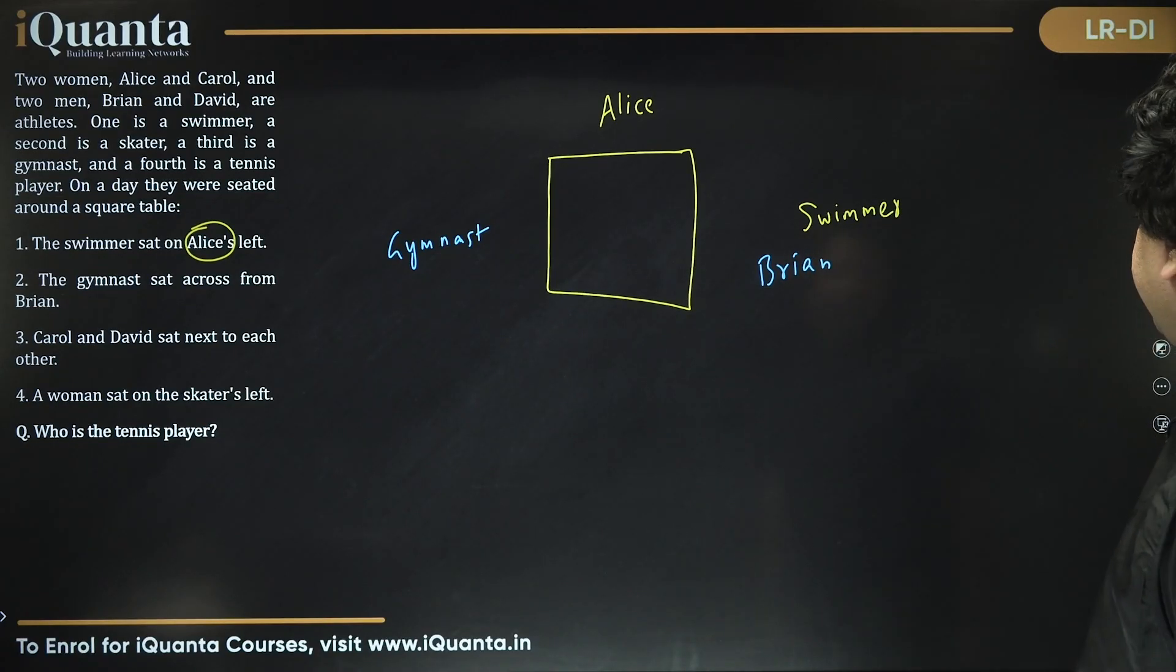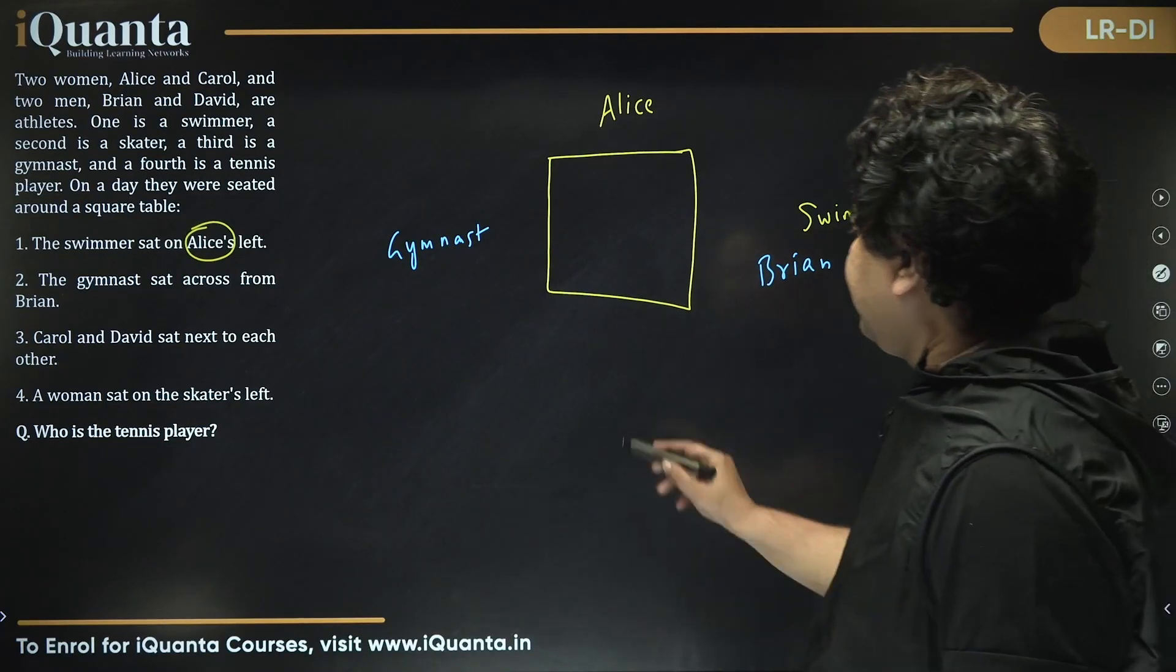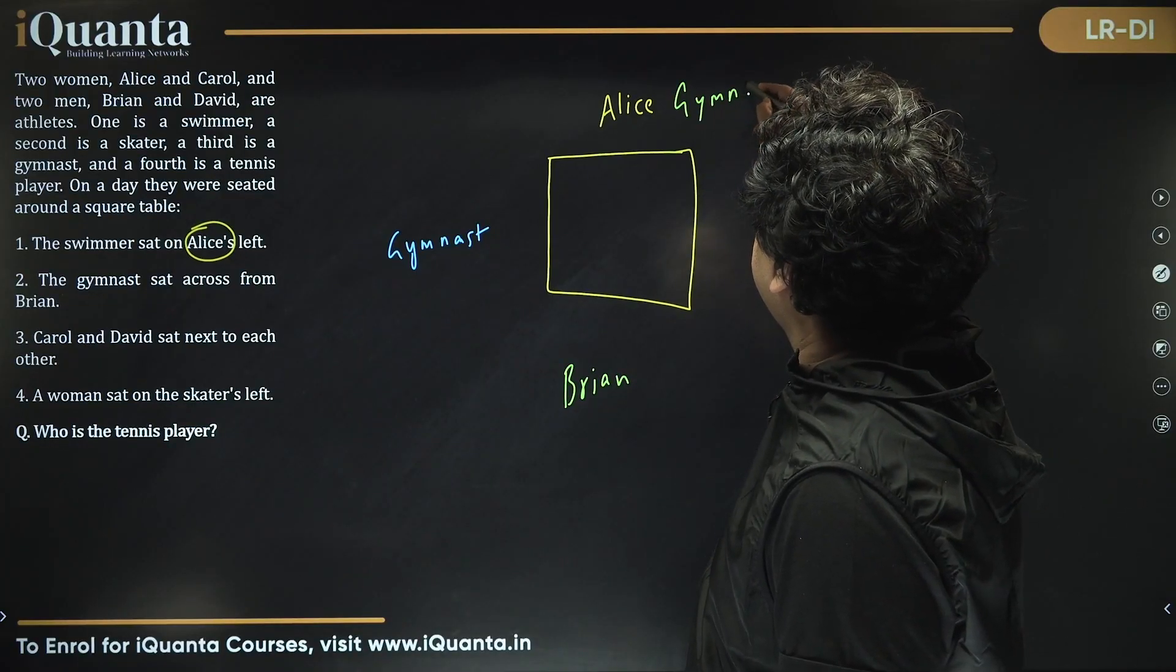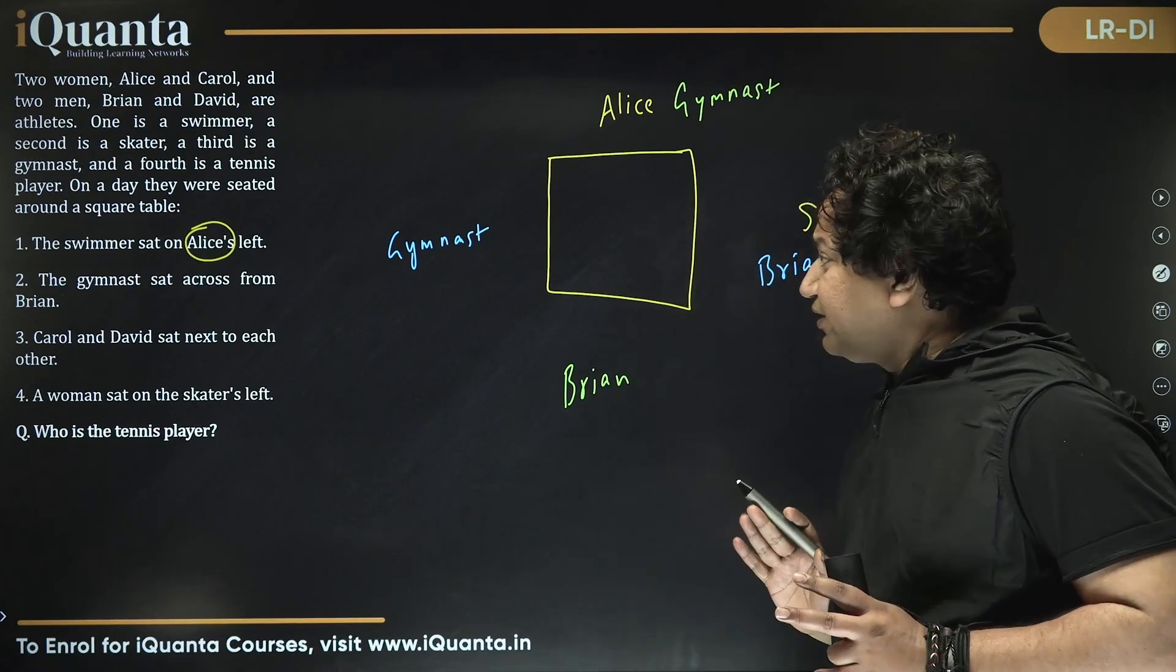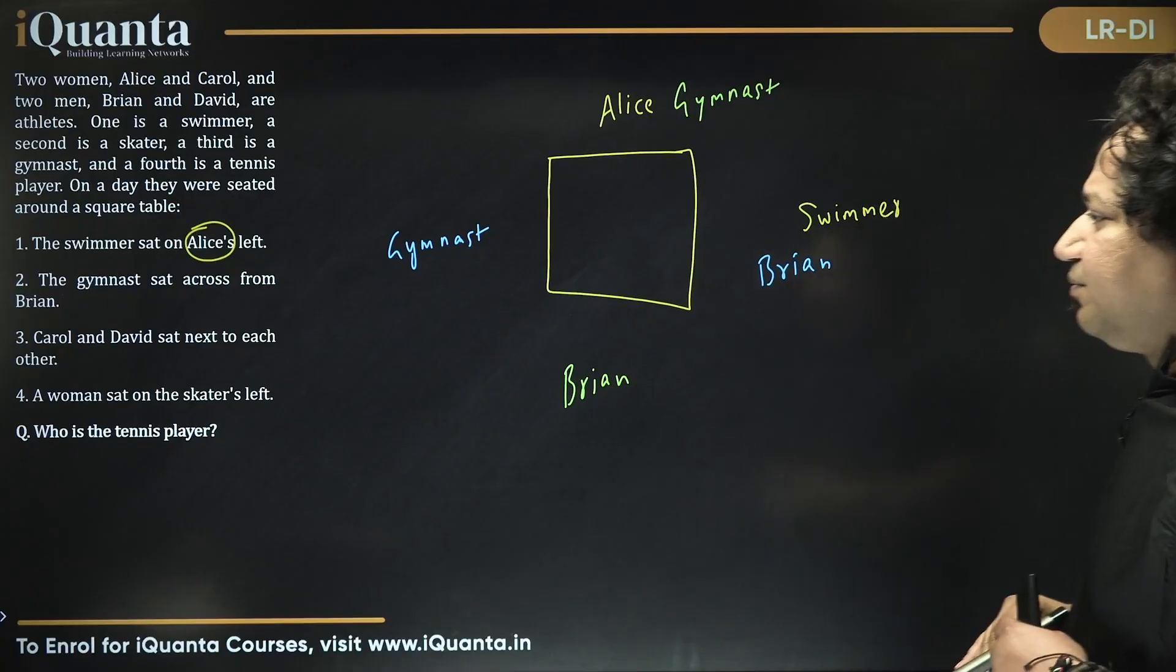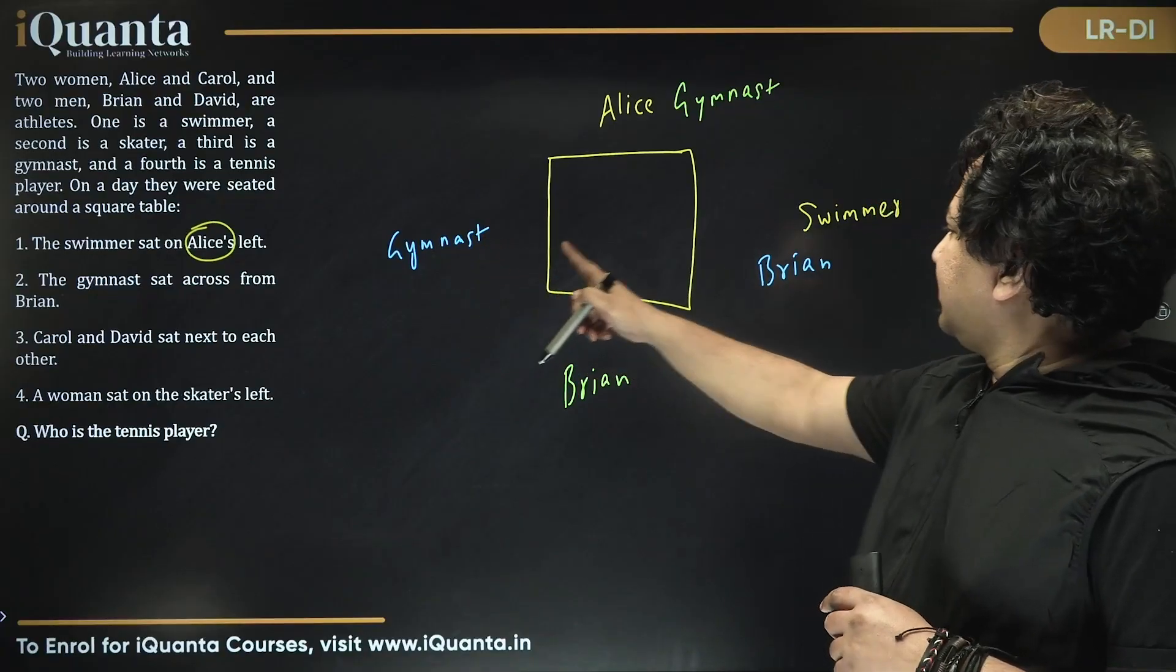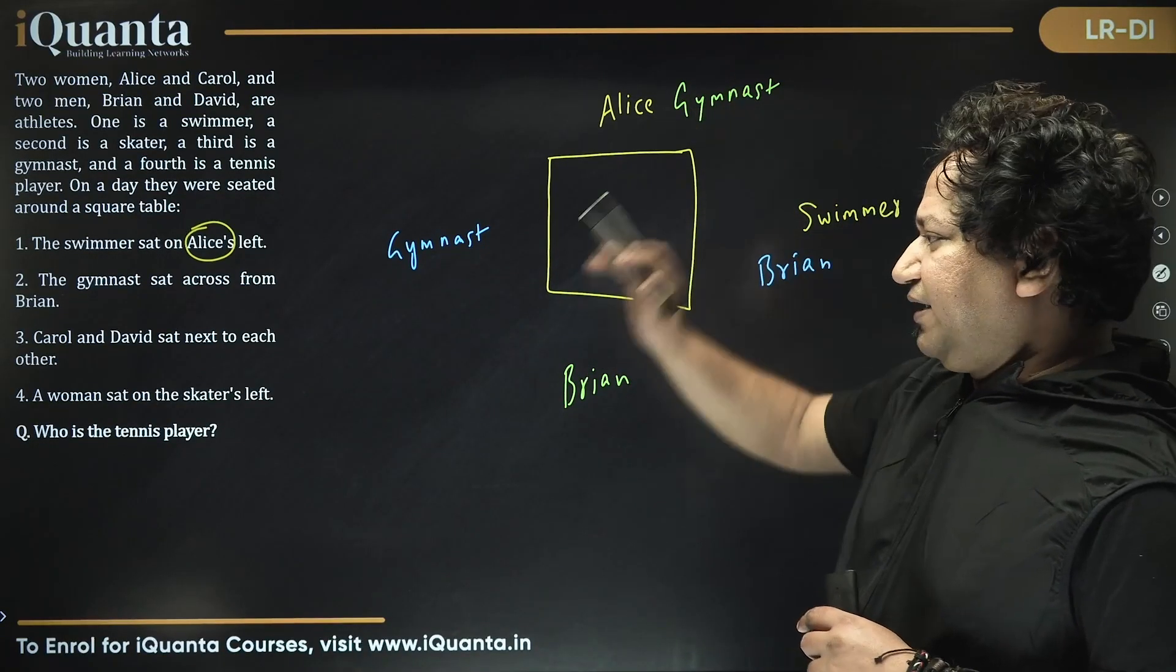This is one of the other possibilities as well. In color green, what if this is Brian? Then Alice must be gymnast. So we have yellow is sure, other inks which I'll be using here will be possibilities. From second statement we got these two possibilities. Obviously Brian cannot be sitting over here. If Brian is here then this must be gymnast, and we know here we have a swimmer and Brian cannot be here.